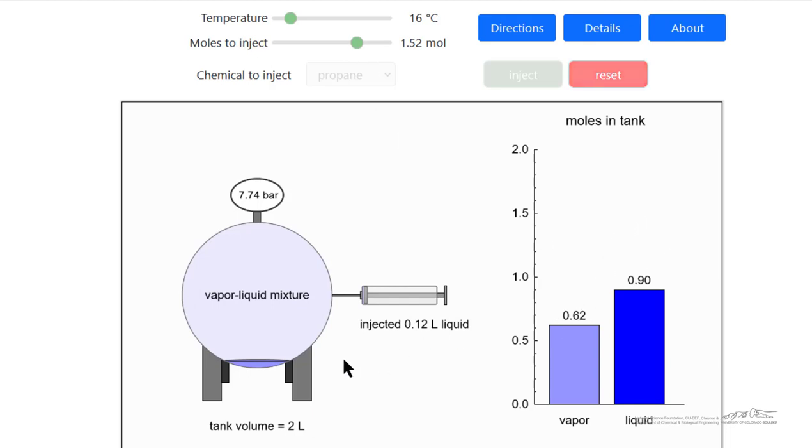Remember, the amount of volume occupied by the liquid is small compared to this total volume. The total volume is 2 liters, and the volume of the liquid, based on this diagram, is about 0.07 liters or so.